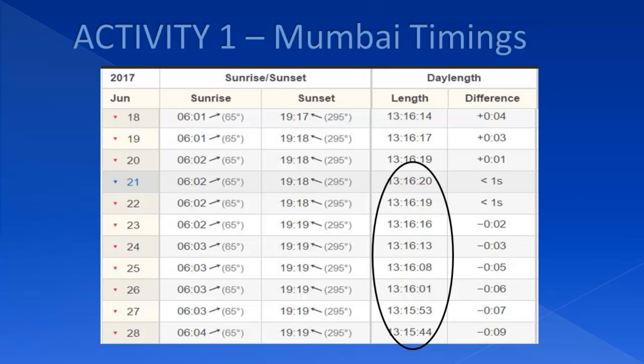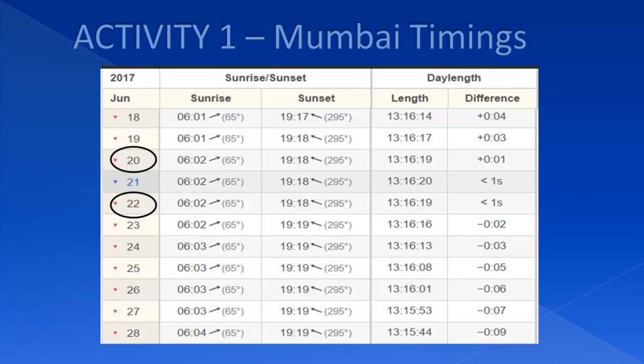After 21st June, nights are becoming longer and days are becoming shorter. Which two dates have day and night of the same duration? 20th and 22nd June are the days with the same duration.